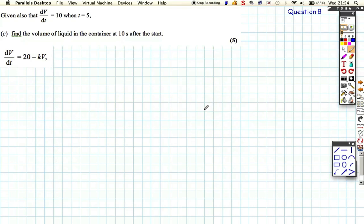Now, we've just shown an expression. We've got dV/dt, we also had the expression V. This is the one we've just worked out: V is equal to 20 over k minus 20 over k e to the minus kt. And we're asked to find, we're given the information that dV/dt is 10 when t is 5. We need to find the volume in the liquid 10 seconds after the start. So we want to find the value of V when t is 10, but we need to do some manipulation first because we actually don't know what this constant k is.